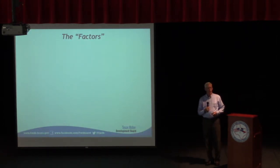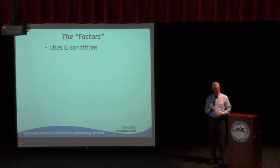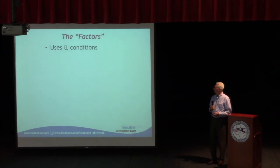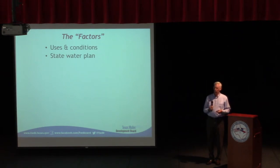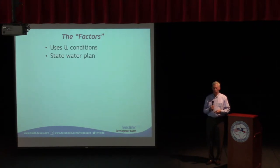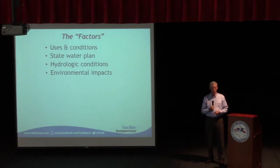What are the factors required to be evaluated by district representatives? They have to look at the uses and conditions of the aquifer — the basic physical properties, water levels, flow paths, and relationships between aquifers, as well as who's using it and how much demand there is. They're also required to look at the state water plan, which documents the various water strategies, demands, and needs for the whole state. Hydrologic conditions — similar to uses and conditions — must also be evaluated, along with environmental impacts, which can be wide-ranging.